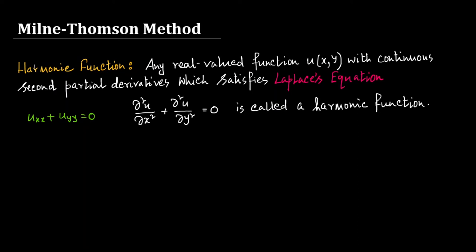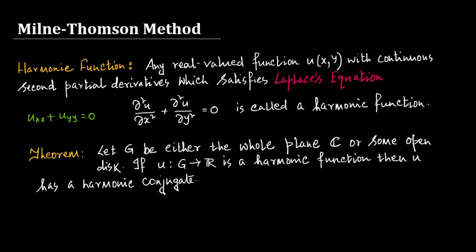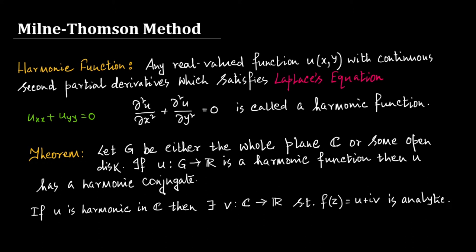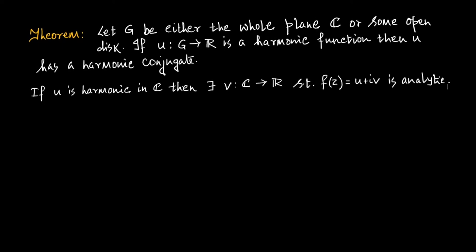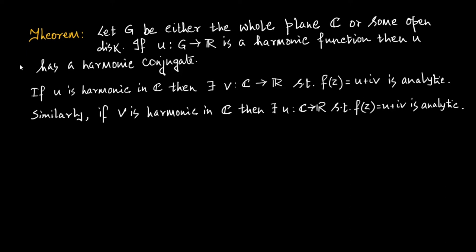Most welcome to the 11th lecture of my series on complex analysis. In our previous discussion, we have seen that if a function is harmonic in the whole complex plane or some open disk, then the function has a harmonic conjugate. That is, if u is harmonic in C, then there exists v such that f(z) = u + iv is analytic. Similarly, if v is harmonic in C, there exists u such that f(z) = u + iv is analytic. In our previous discussion, I had shown you if one of u and v is given, how to find the other one and how to construct f(z). If you have forgotten, watch that video once again — the link is in the description below.